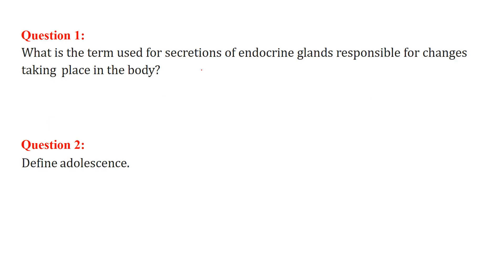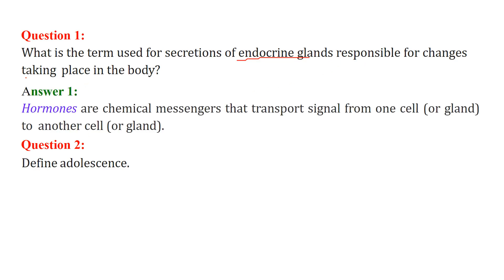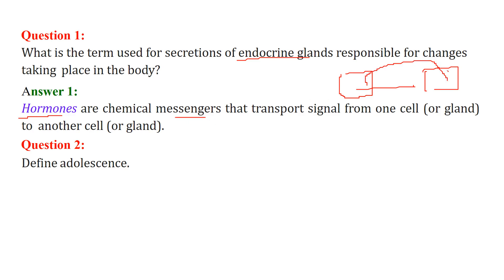What is the term used for secretions of endocrine glands responsible for changes taking place in the body? This is known as hormones. Hormones are chemical messengers that transport signals from one cell or gland to another cell.